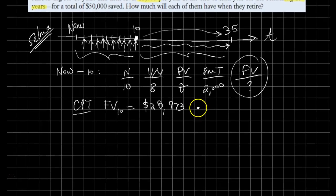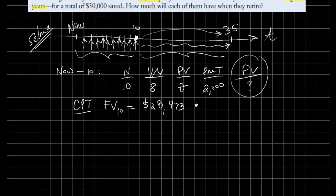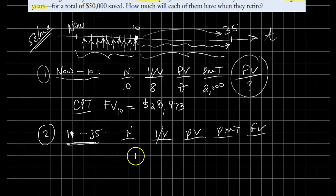In the second step, from year 10 to year 35, again we are using our financial calculator. What we got earlier as the future value is now our present value. This is the initial value by the end of year 10.